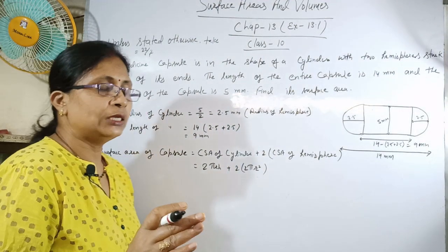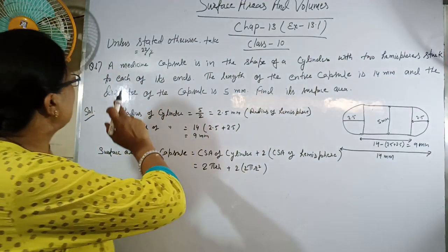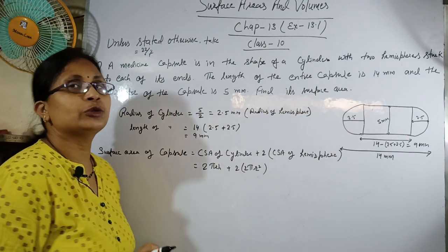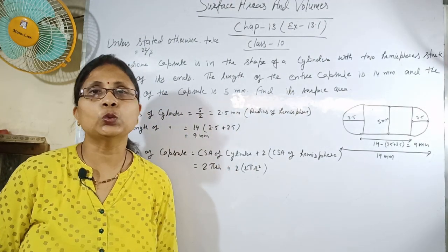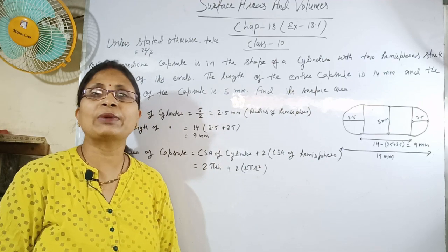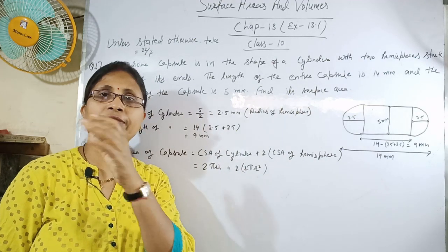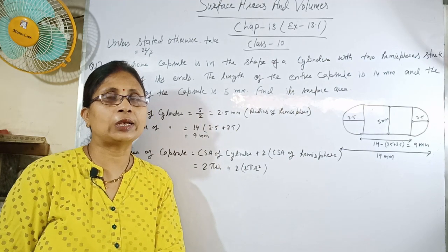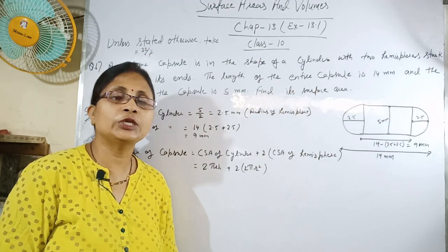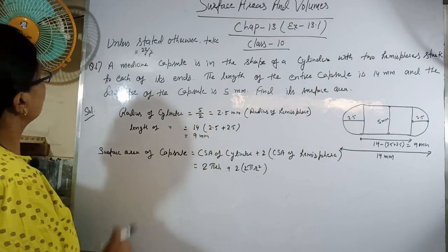Exercise 13.1 के starting में given है कि unless stated otherwise, take pi equal to 22 upon 7. अगर किसी particular question में pi की value given है तब उस value को लोगे, otherwise 22 upon 7 लेना है।